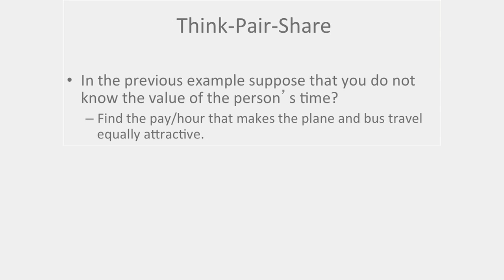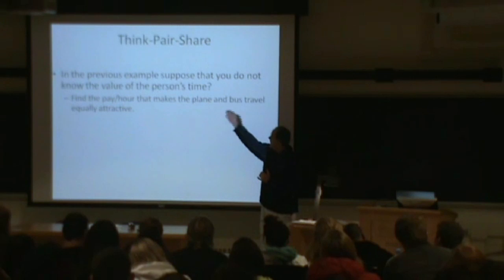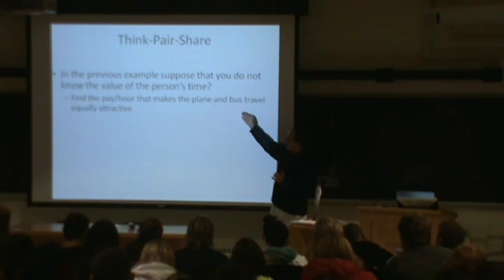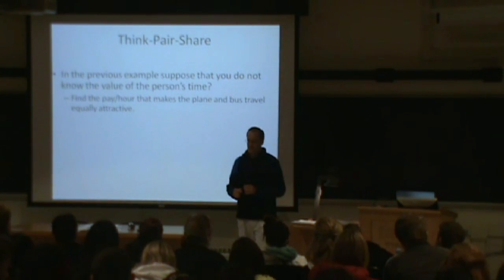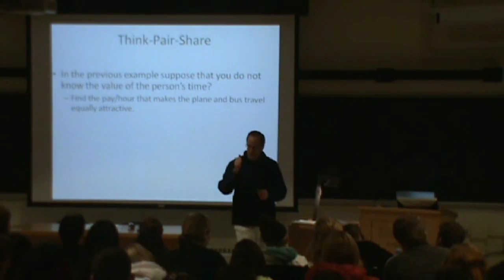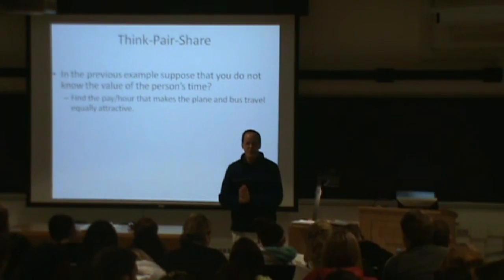Okay, here's your question. In the previous example, suppose you do not know the value of a person's time — the $8 an hour is gone. Find the pay per hour that would make plane travel and bus travel equally attractive. You guys are on the clock. Have fun.